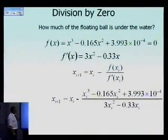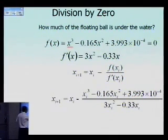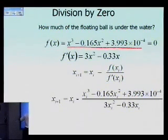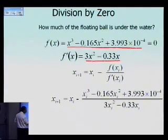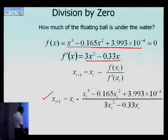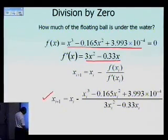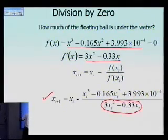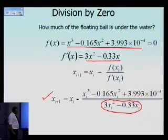Here is the equation for the floating ball problem. The derivative of this function is given here, and if we use Newton-Raphson method, this is what turns out to be the formula for solving this nonlinear equation. You're already finding that if I choose my initial guess to be 0, I'm going to get division by zero there.